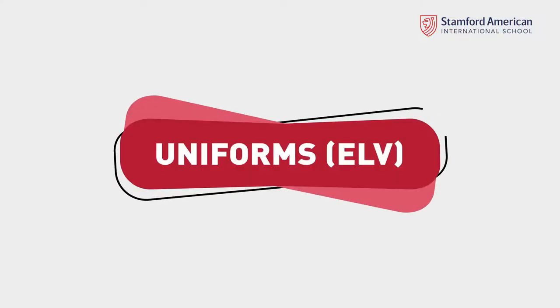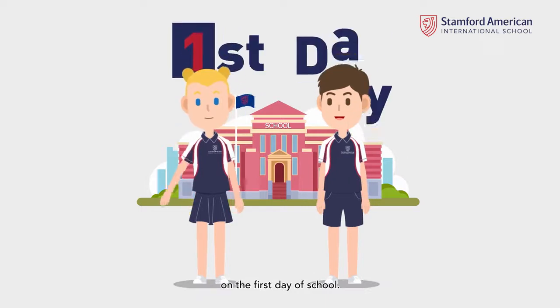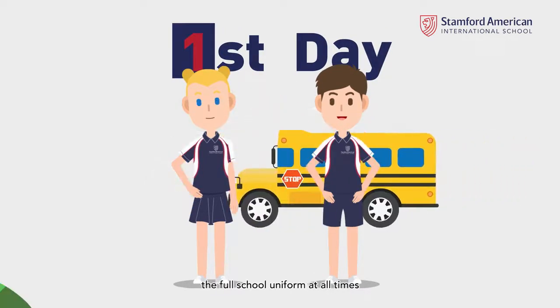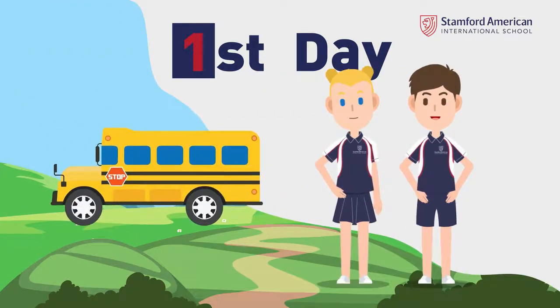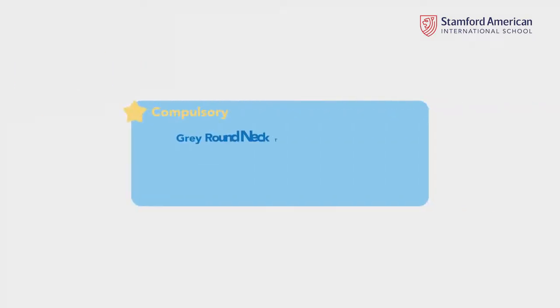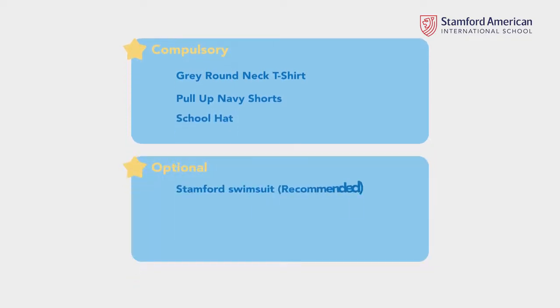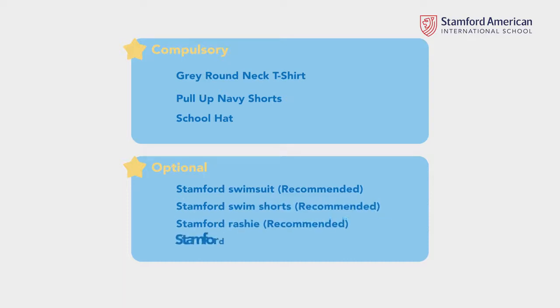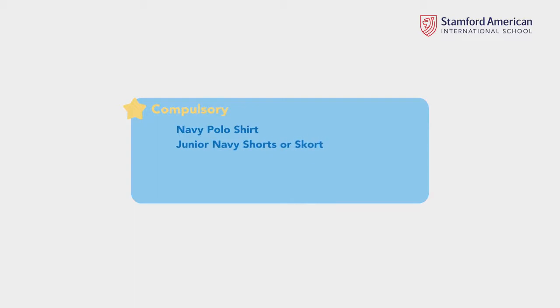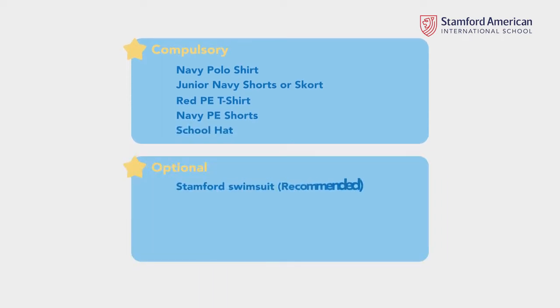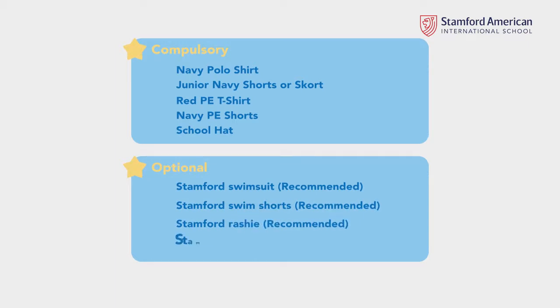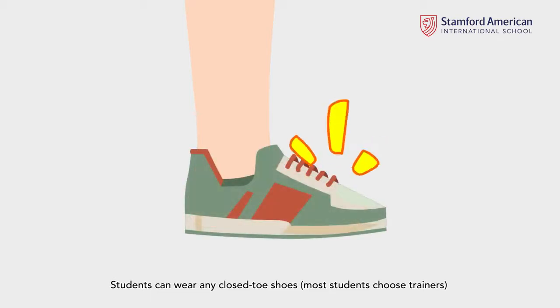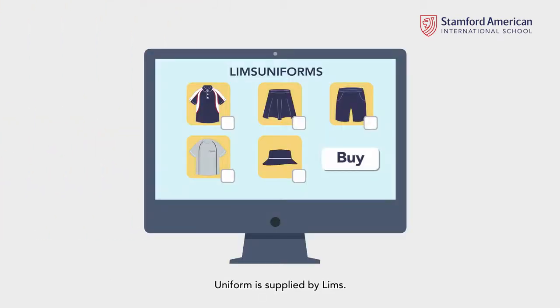Uniforms — ELV. Students must arrive in their school uniforms on the first day of school. All students are expected to wear the full school uniform at all times, including on field trips and on the school bus. Pre-nursery to nursery: gray round-neck t-shirt, pull-up navy shorts, school hat. Stamford swimsuit, shorts, and rashie are optional but recommended. The Stamford backpack is optional. Pre-K to KG2: students can wear any closed-toed shoes and socks in any color. Uniform is supplied by LIMS.